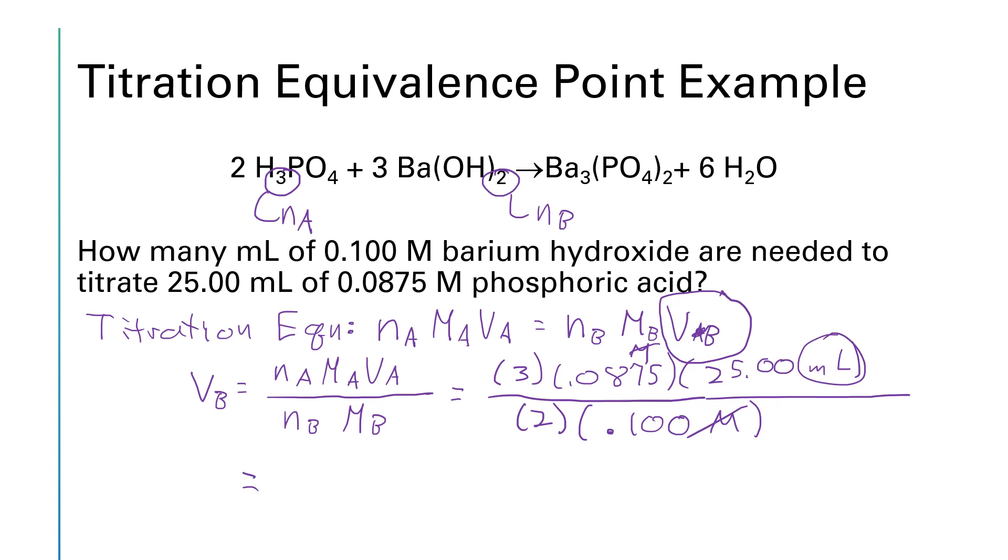All right molarity cancels between the top and the bottom the only unit we're left with is milliliters which is good since we were asked to find a volume so now I'm going to take three times 0.0875 times 25 divided by 2 and divided by 0.1 which is going to give us a volume of 32.8125 milliliters and it looks like we can keep about three significant figures because of our molarity so that'll work out to be 32.8 milliliters. Now when you're in lab most titrations are done with burettes that read to two decimal places so if you're actually doing this in lab you would record one more decimal place beyond this.